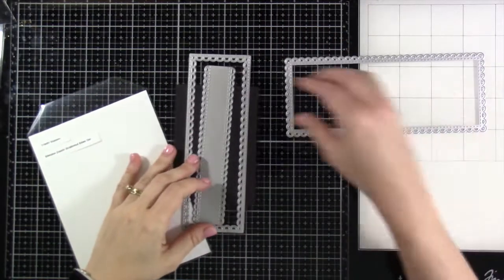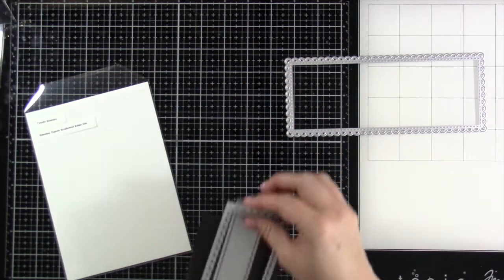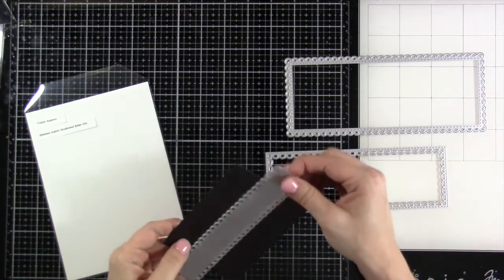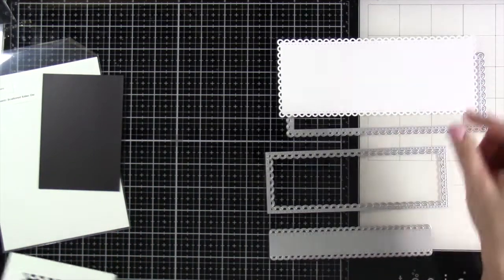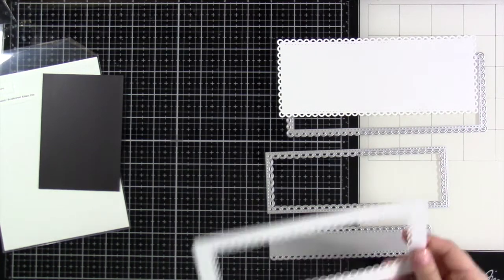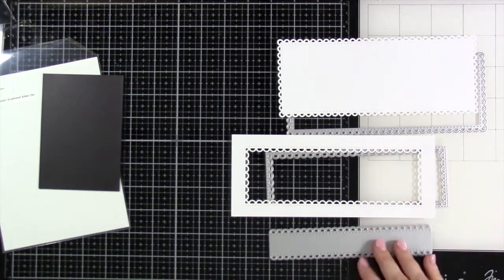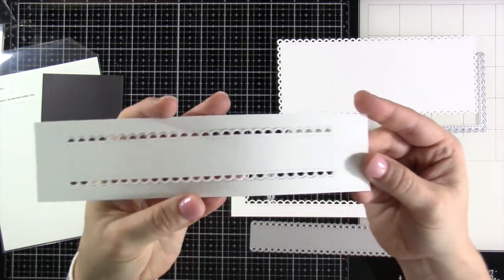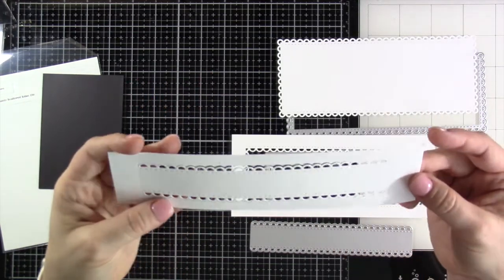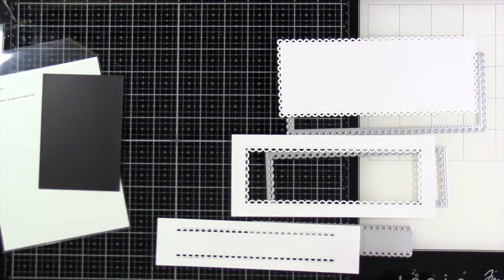Another addition to the Slimline series is the Dainty Scalloped Edge Dies. This die set includes an open scalloped edge die, an inner scalloped edge die, and a scalloped strip die. All three dies have stitching detail as well. I love how this one is actually something that you could make continuous or as long as you want, so that's super nice also.